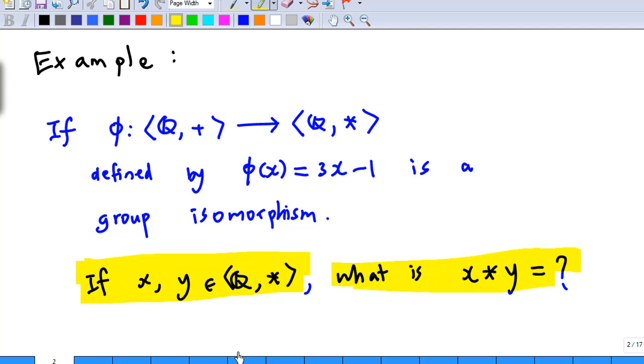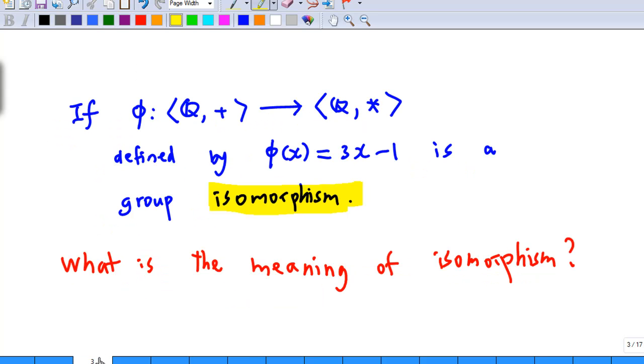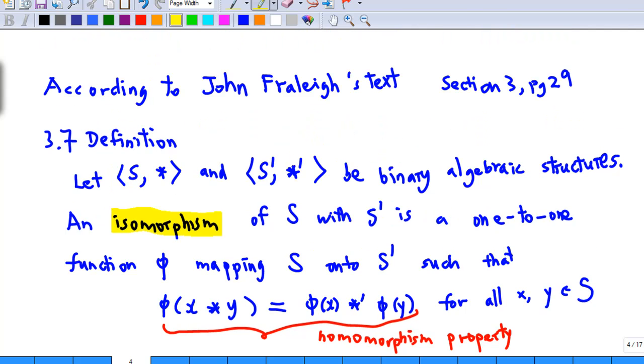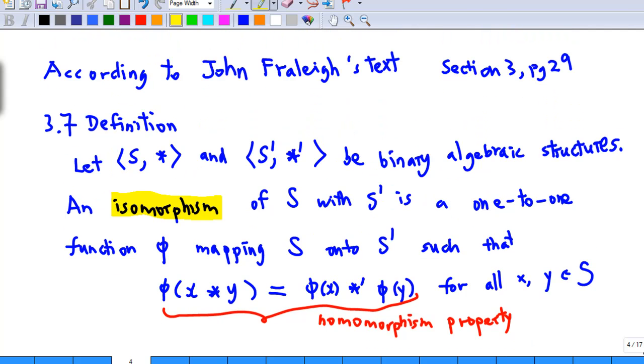First, we must understand the question. What is the meaning of isomorphism? According to John Fraleigh's text, section 3, page 29, definition 3.7.